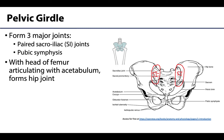The other major joint is going to be the pubic symphysis, and this is an unpaired joint. It is where the pubic portions of the two coxal bones meet anteriorly in a cartilaginous joint, and there is very little mobility in this particular joint as well.